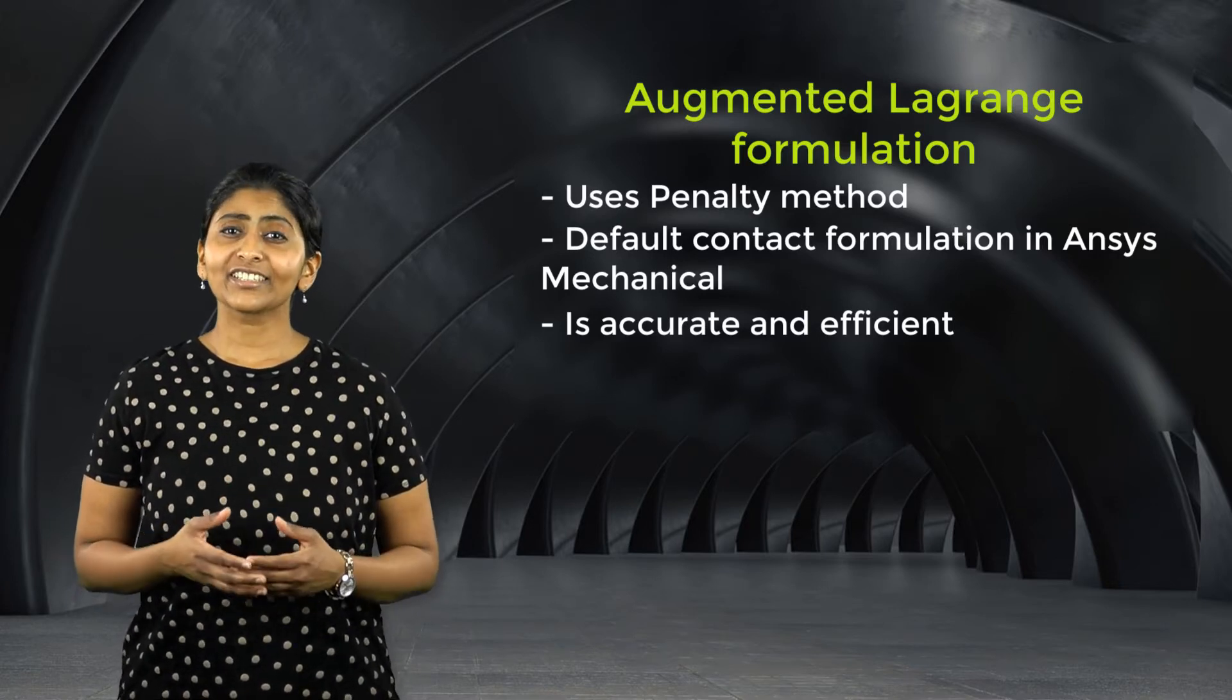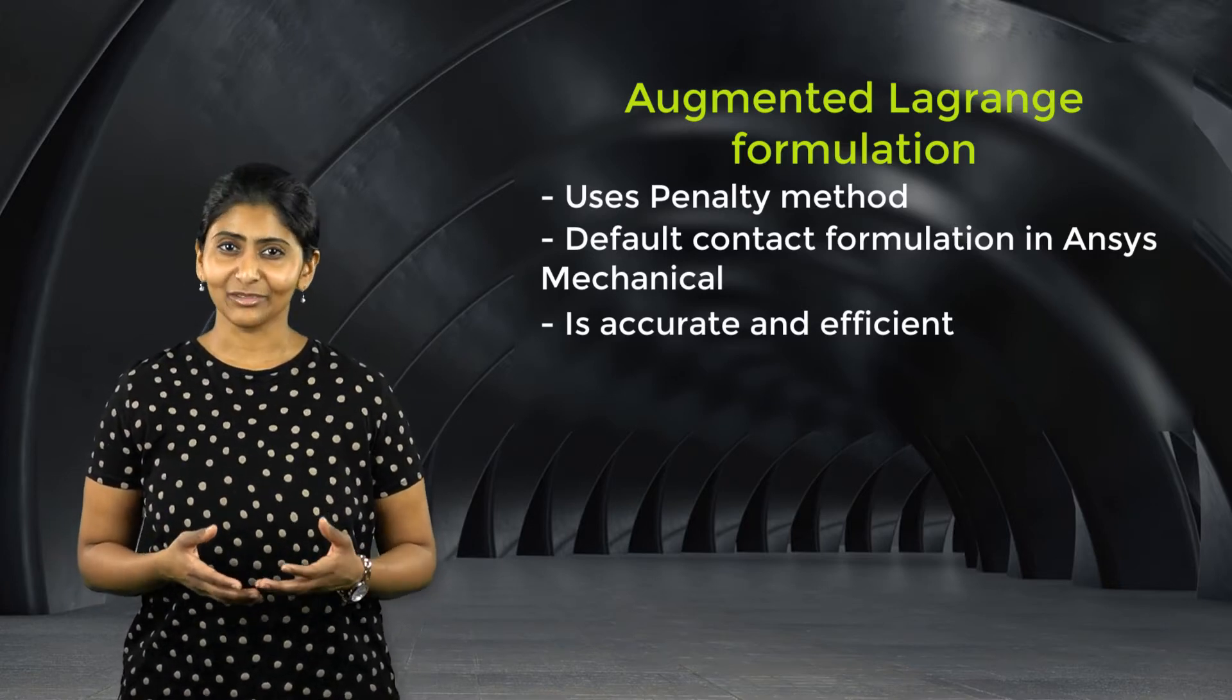So now we will discuss the penalty method a little bit to understand how it is implemented. The penalty method treats contact as a stiff spring that resists bodies from penetrating each other. So imagine we have two bodies that are close to each other, but not touching each other yet. If the bodies are not touching each other, there are no contact interactions and the spring does not come into play yet.